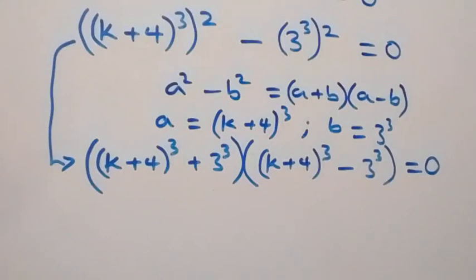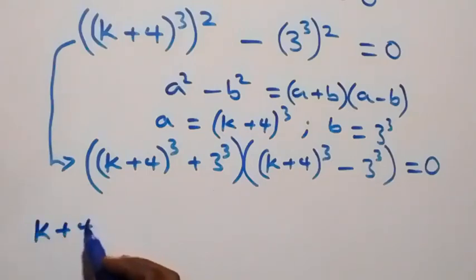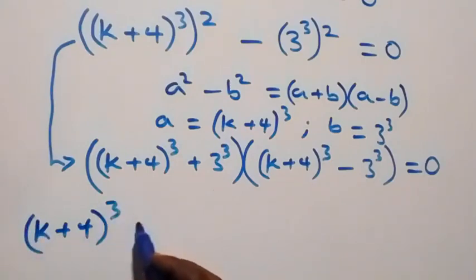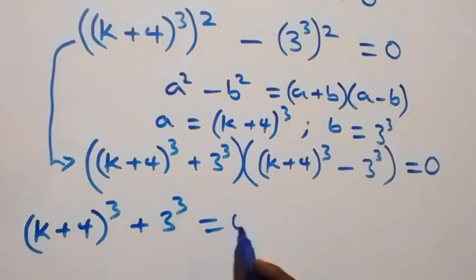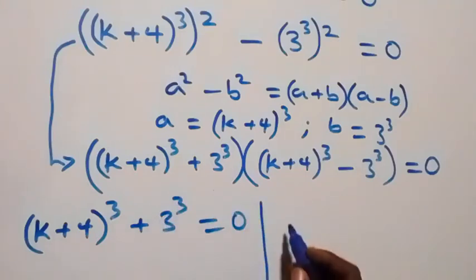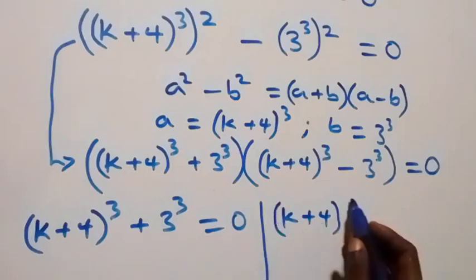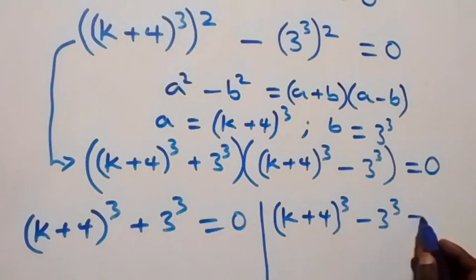From here we have two possible cases. The first case: k plus 4 raised to power 3 plus 3 raised to power 3 equals to 0.